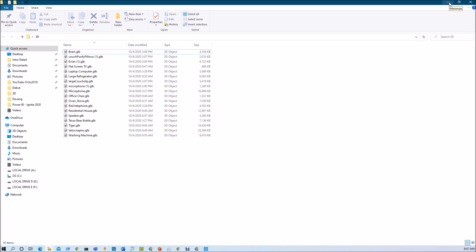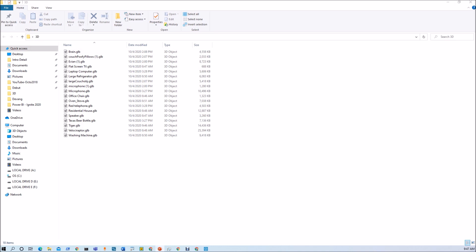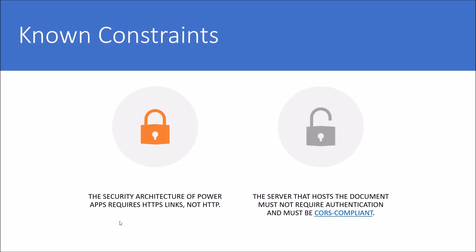Now, you have downloaded the 3D object file, but where do you upload it and how do you use it in PowerApps? Before we proceed, we need to consider two important constraints. First, wherever we are uploading the images, the link must be HTTPS — HTTP is not supported because the security architecture of PowerApps requires HTTPS. Second, the server hosting the document must not require authentication and must be CORS compliant.